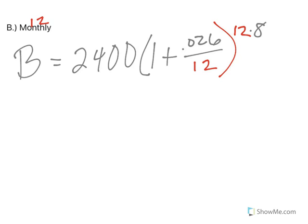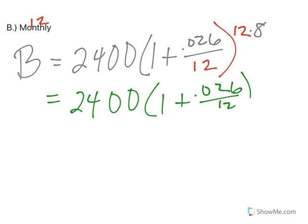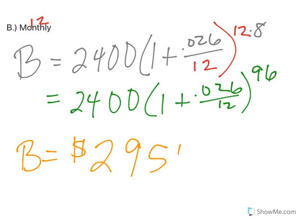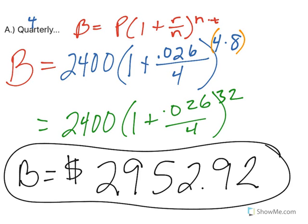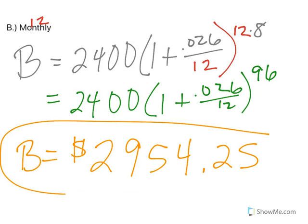I recommend multiplying your exponent, so 12 times 8 is 96. Then you can plug that whole thing into your calculator. If you compound monthly, you end up with $2,954.25. You can see the difference—it's not huge, about $1.30-ish. But it's a little bit more.